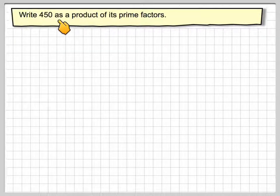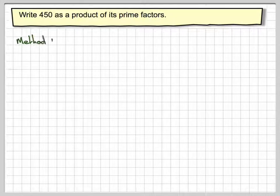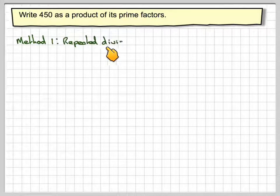Right, in this video we're going to write 450 as a product of its prime factors. So method one, repeated division.